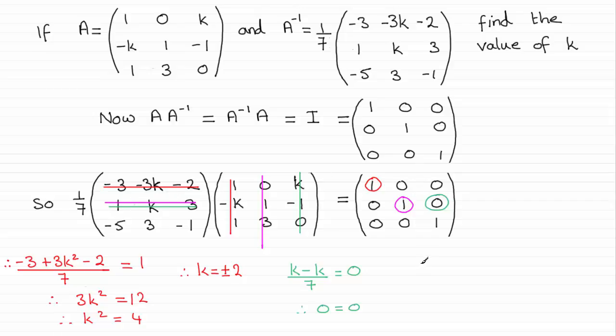And by multiplying that out, I get 1 times 0, which is 0, and then k times the 1, which is k, and then 3 times the 3 there, which is 9. Put that all over 7, and that would give me the 1 that we've got here.